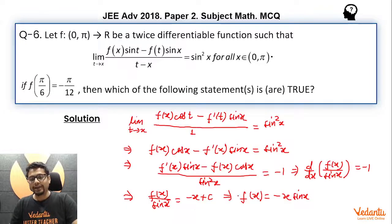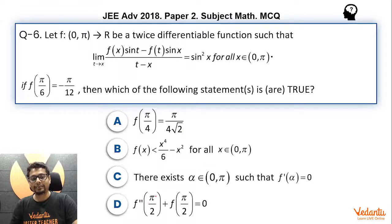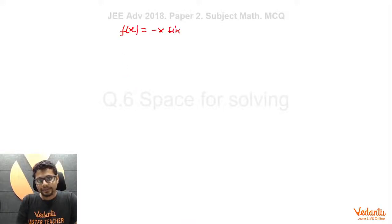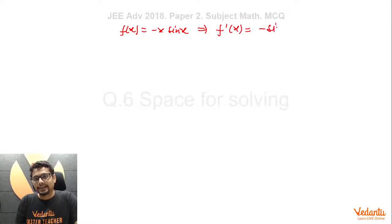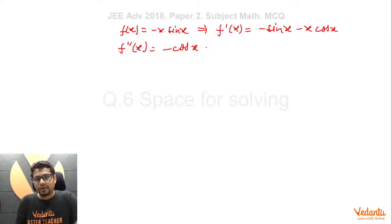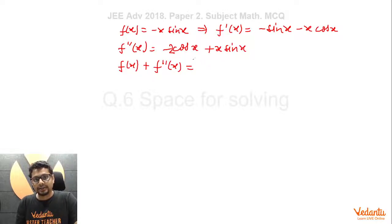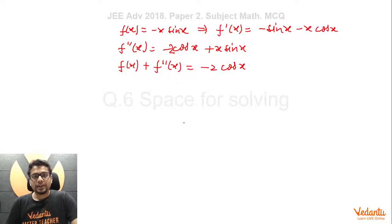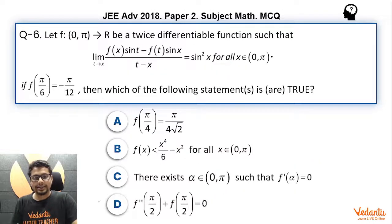For option D, we need f″(π/2) + f(π/2). Given f(x) = −x·sin(x), we compute: f′(x) = −sin(x) − x·cos(x), and f″(x) = −cos(x) − cos(x) + x·sin(x) = −2cos(x) + x·sin(x). So f(x) + f″(x) = −x·sin(x) + (−2cos(x) + x·sin(x)) = −2cos(x). At x = π/2, cos(π/2) = 0, so f(π/2) + f″(π/2) = 0. Option D is correct.